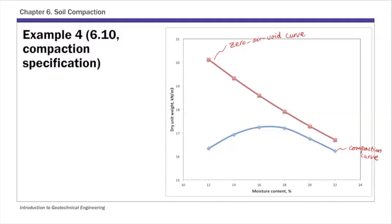And then we're going to actually first get these two numbers, gamma d max and optimum moisture content. So these two numbers are, and then the optimum moisture content, 16.8. Once you get these two,